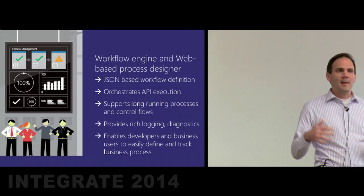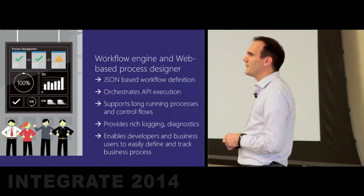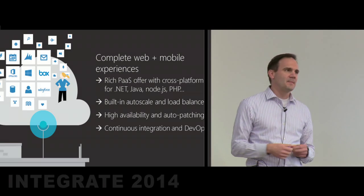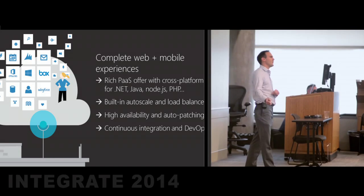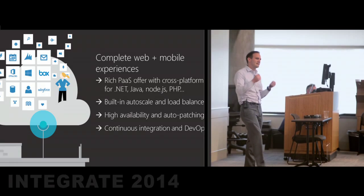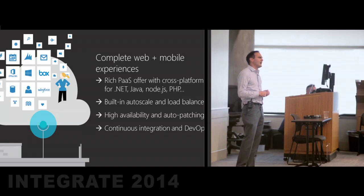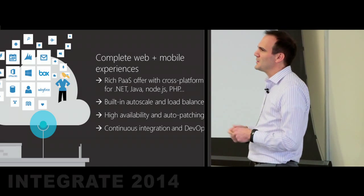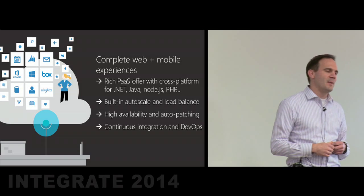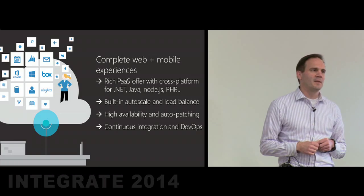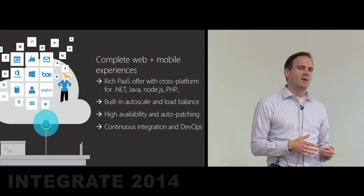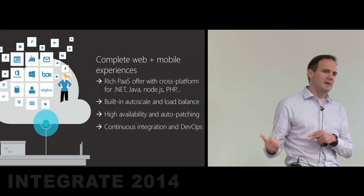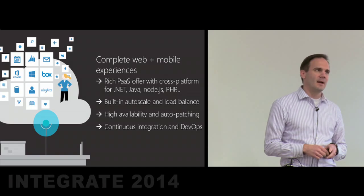We're integrating all of this capability with our existing web and mobile services. The same capabilities you have today for building mobile back-ends or web applications, you can use in the same context using the same hosting model and extensibility points, with built-in auto-scale and load balancing so you can adjust to seasonal demands, with high availability and auto-patching. It's a complete PaaS platform. We also provide great integration with our developer services — you can enjoy continuous integration with GitHub or Visual Studio Online services, and DevOps support all built into the platform.